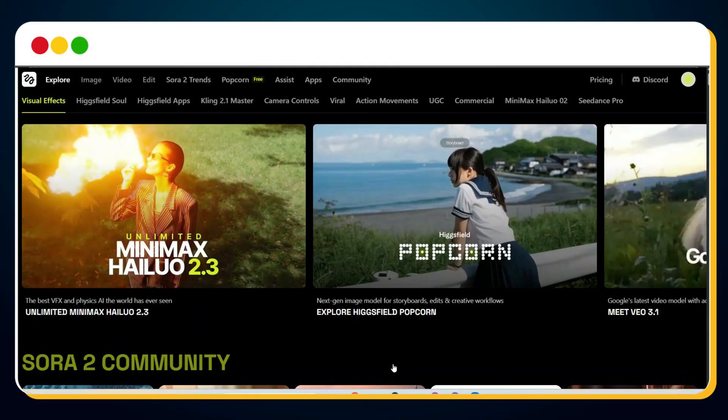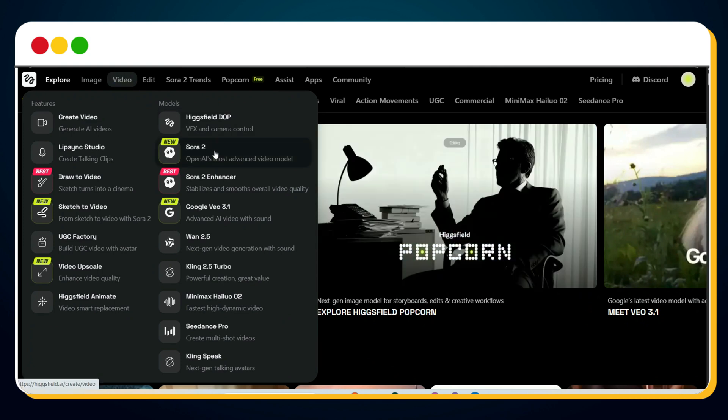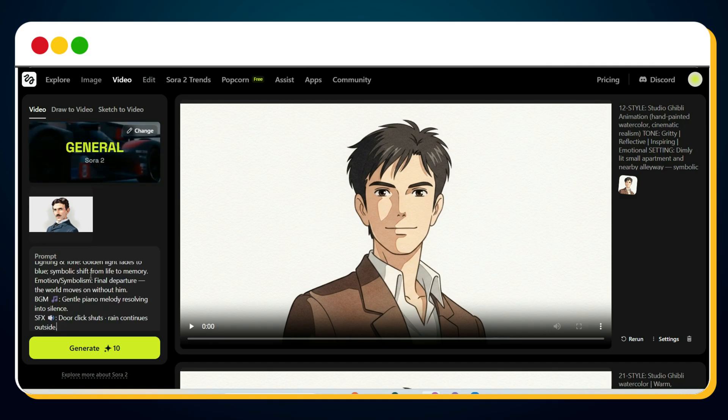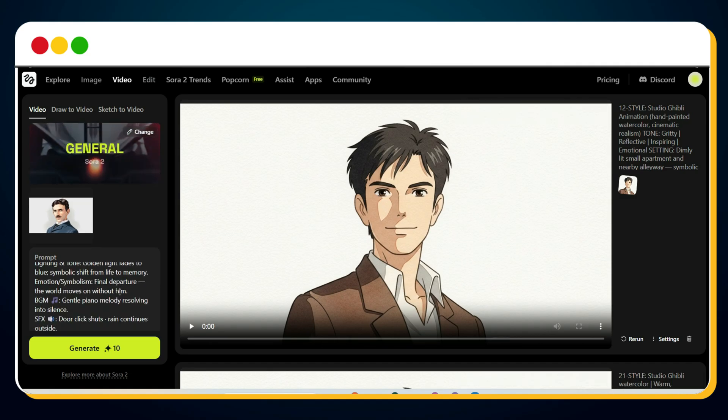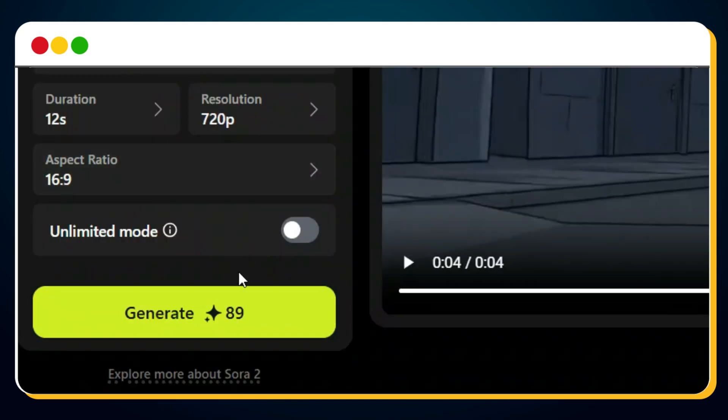You can not only remove the watermark but also enhance your video quality using Higgsfield.ai. Once you sign up and log in, go to video in the top navigation bar then click Sora 2. Next upload your character image here, paste your Sora 2 perfect prompt in this box, and adjust the duration if you want. The best part? Higgsfield lets you generate longer videos, up to 12 seconds per clip. That's 2 extra seconds compared to Sora 2's 10 second limit, giving you more room for dialogue, emotion, or cinematic motion.